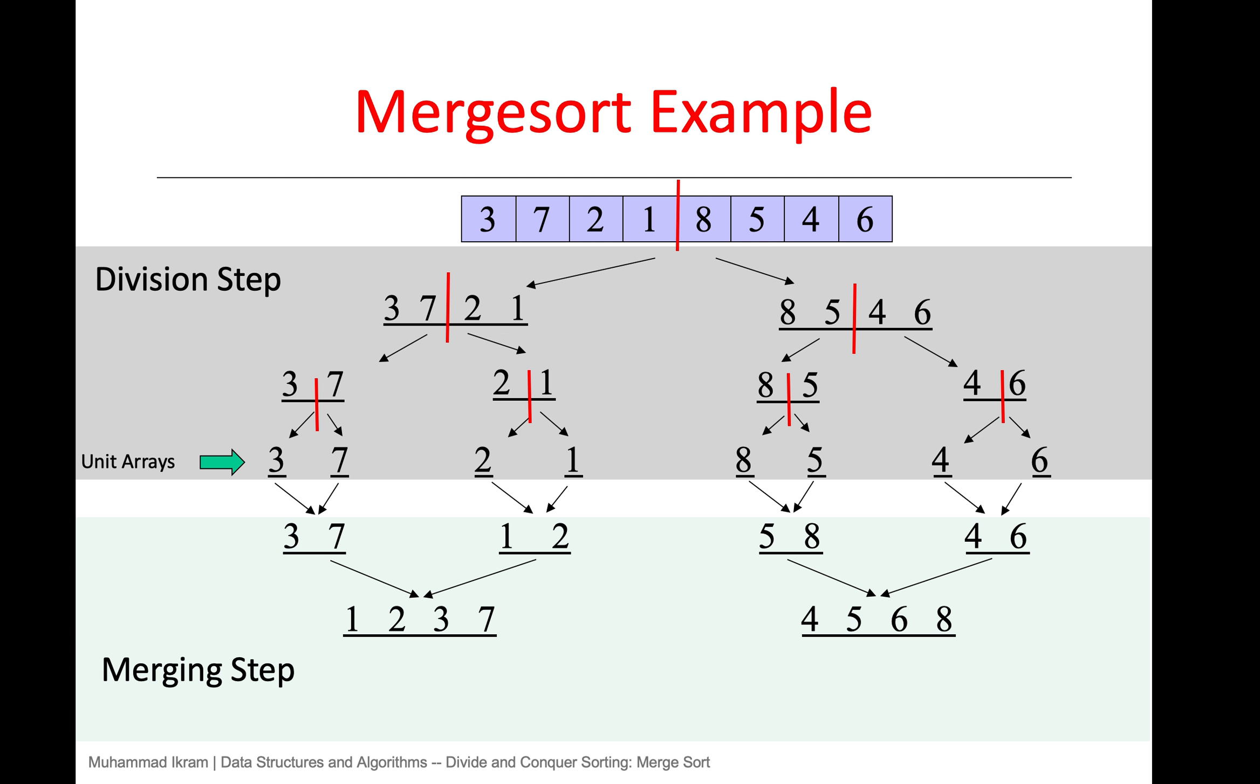We have elements 3 and 7. They are in the right order, so we're not going to change anything. We just need to create a new array and merge them into it.